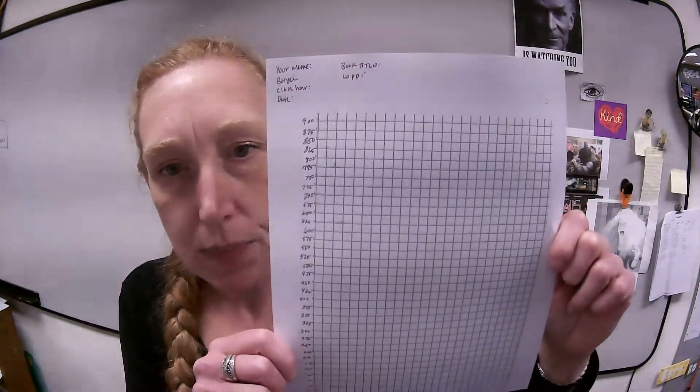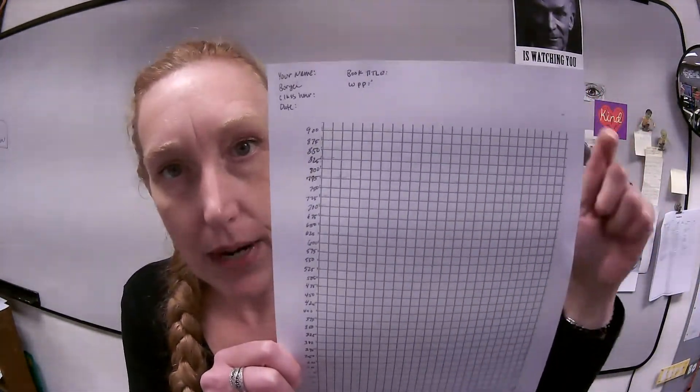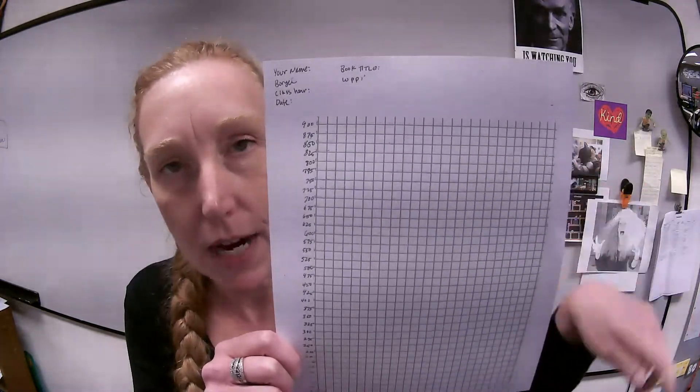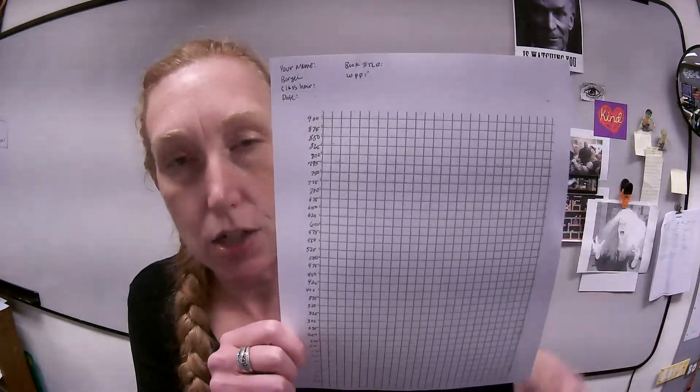I'm going to give you a chart that looks like this. You're going to put your name, my name, the class, the date, and you're going to put the title of your book and how many words per page.